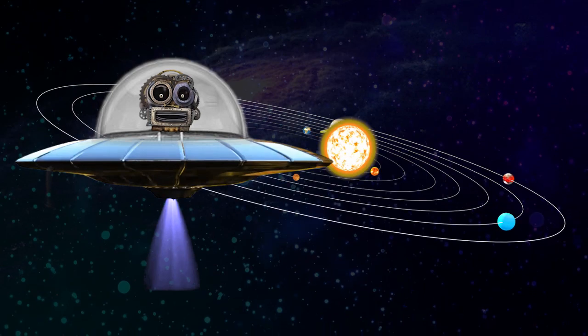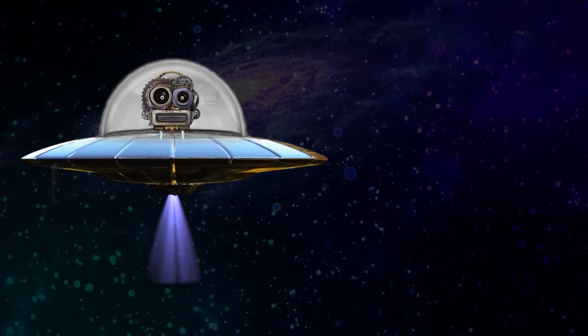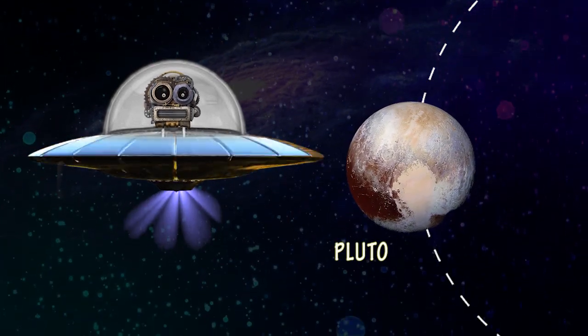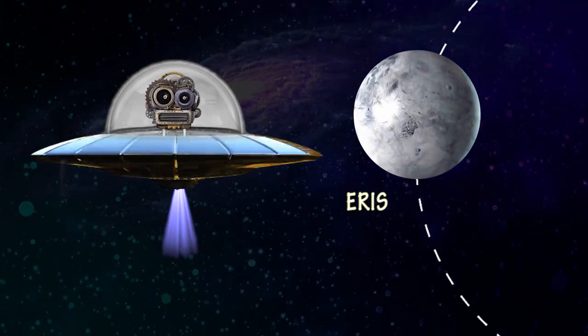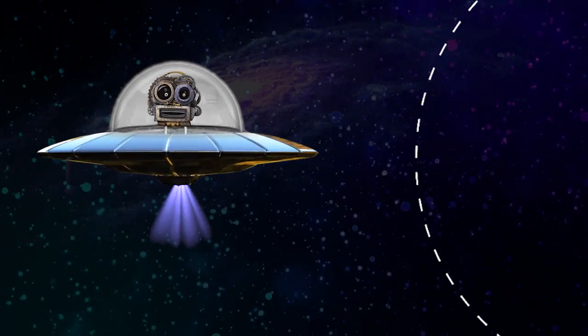We know that we also have five dwarf planets in our solar system: Ceres, Pluto, Eris, Makemake, and Haumea.